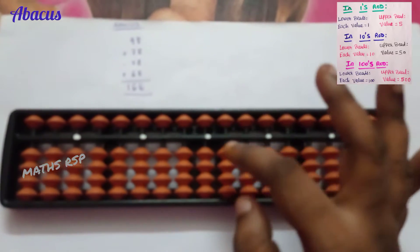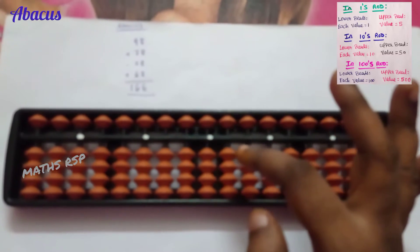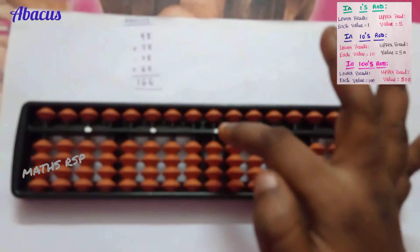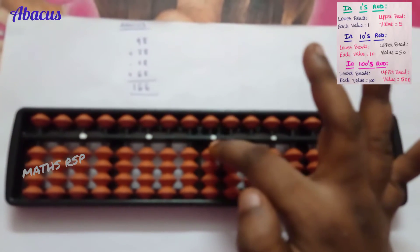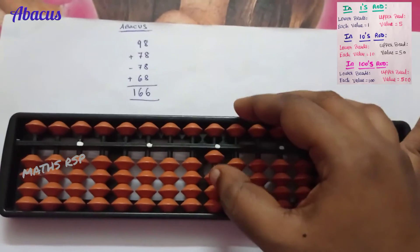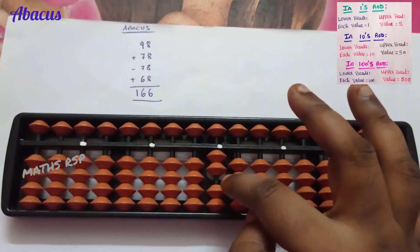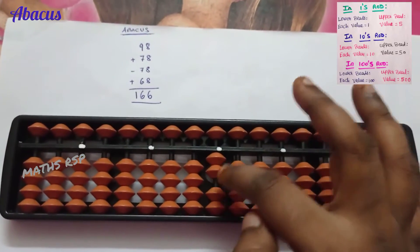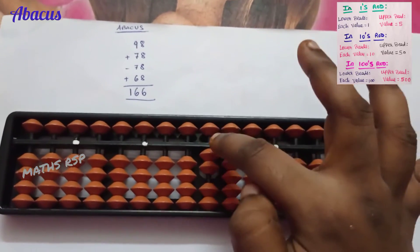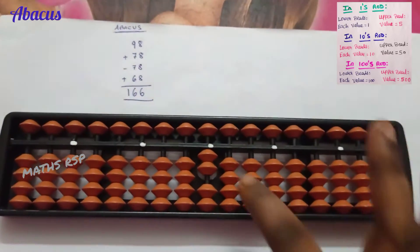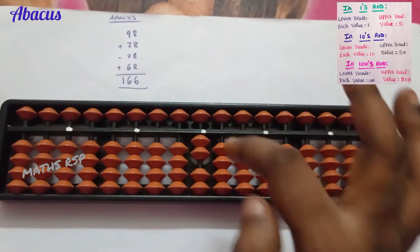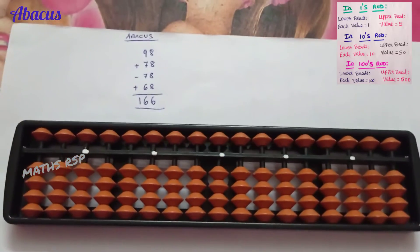For example, if you need to add two, in the one's strot lower beads each value is one, so one, two. If two beads touch this answer bar, the value is added, so the answer is two.